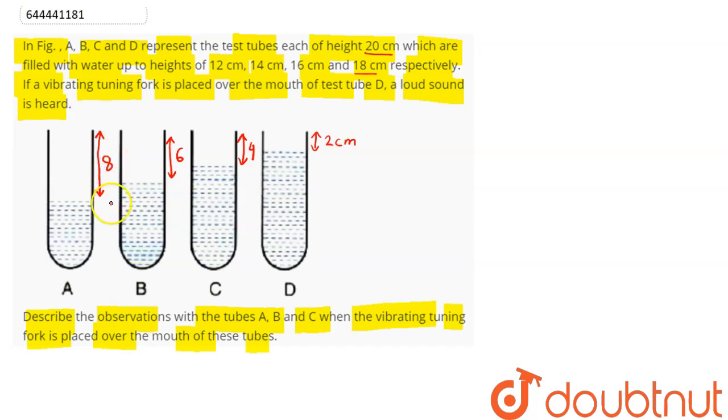So we can say here no loud sound is heard with tubes A and C. With A and C, this tuning fork does not produce loud sound. Whereas with tuning fork, B produces loud sound. So loud sound is heard with test tube B.